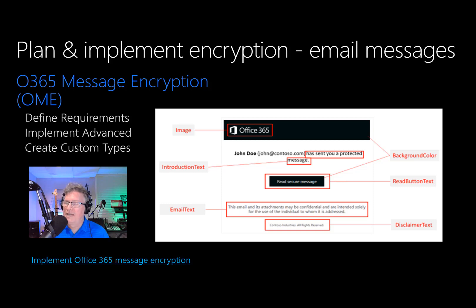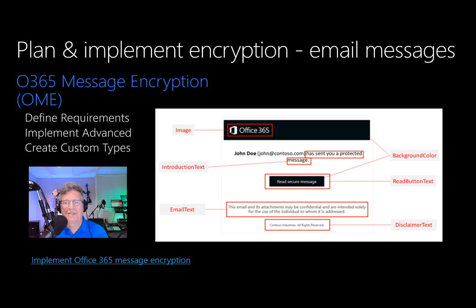While basic Office 365 message encryption allows only a single template, Office 365 advanced message encryption provides more flexibility with multiple branding templates for different purposes. Advanced message encryption allows you to use multiple templates for email messages and configure an expiration time for unprotected messages. Use templates to fulfill several use cases such as individual department templates (finance, sales, etc.), templates for different geographical regions or countries, if you want to allow emails to be revoked, or if you want emails sent to external recipients to expire after a specified number of days.